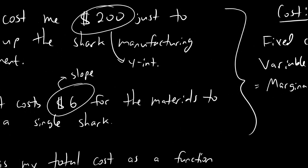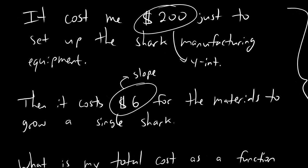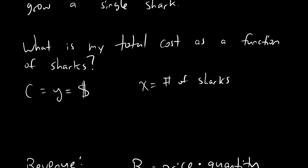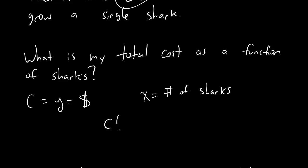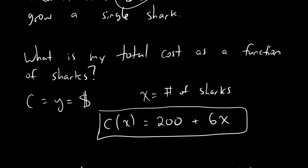And so we go back over here, we take a look at the numbers we have. The variable cost is $6, because it's $6 per shark. The fixed cost is $200, because that's the cost we have to pay even if we don't make any sharks at all. And so the line that we get looks like this. C of x is equal to our fixed cost, a flat $200, plus $6 per shark. So 6x. And that is the final equation for our cost. That's cost as a function of sharks, people.